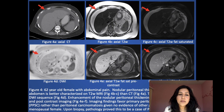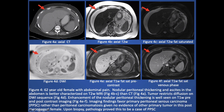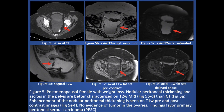Here is a 62-year-old female with abdominal pain. On the CT images, there is ascites and ill-defined nodular thickening. This is better characterized on the adjacent MR images. The tumor restricts diffusion on the DWI sequence and shows enhancement on the dynamic images. These features favor primary peritoneal serous carcinoma rather than peritoneal carcinomatosis, given there is no evidence of another primary tumor in this postmenopausal woman.